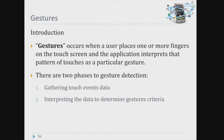Next we go to gesture feedback. Gesture feedback is when a user places one or more fingers on the touch screen and the application interprets the pattern of touch as a particular gesture. There are two pieces to gesture: the first is gathering touch event data, and the second is interpreting the data to determine gesture criteria.